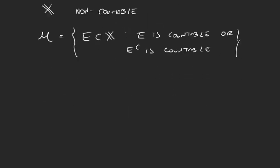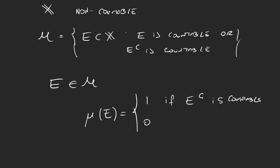And now we define the measure. How do we do that? Well, for any set E in our sigma algebra, we will define mu as 1 or 0. It will be 1 if E complement is countable, and it will be 0 if E is countable. So basically what this mu does is give some weight, the weight 1, to non-countable sets.